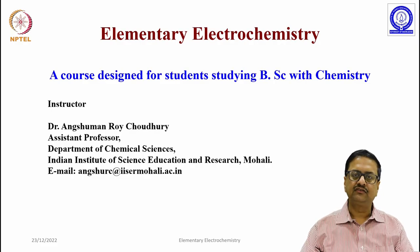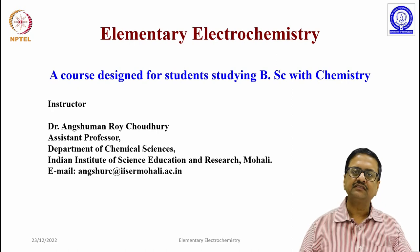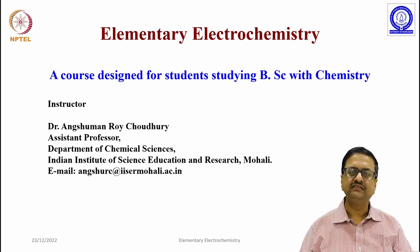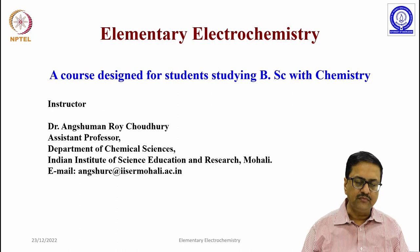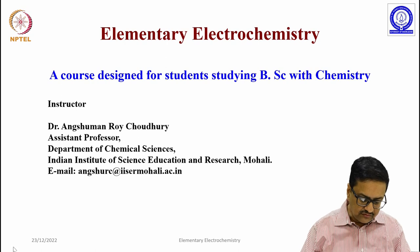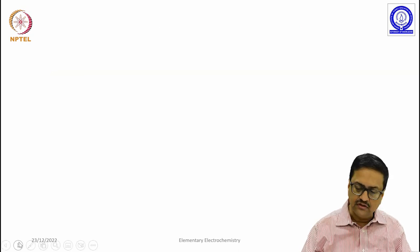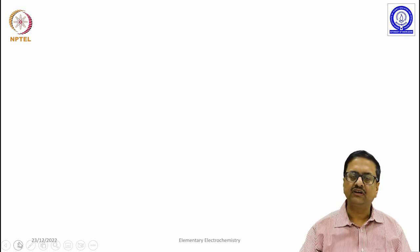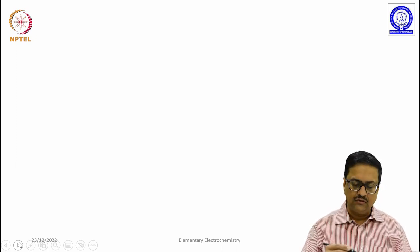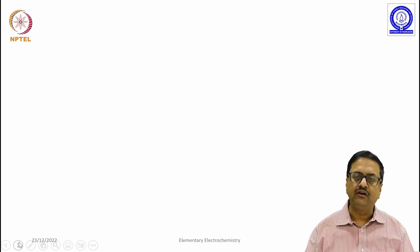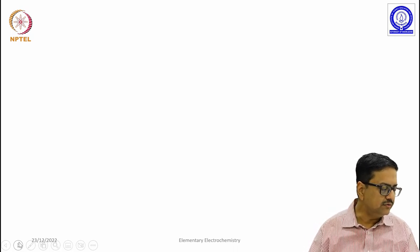Welcome back to the course Elementary Electrochemistry. In the previous class, we discussed how to measure the EMF of a cell and how one can determine the mean ionic activity coefficient using EMF measurements. Today we are going to continue and discuss a few important aspects on how a cell is constructed and the meanings of some notations I have been using over the last few classes.